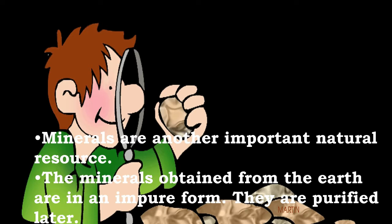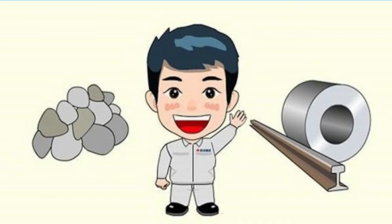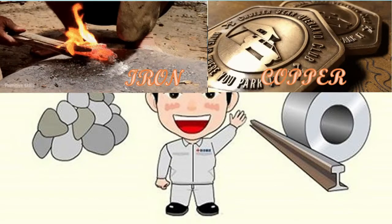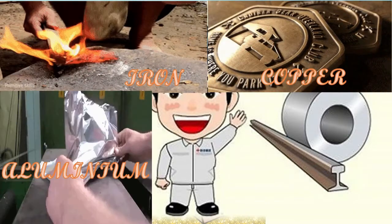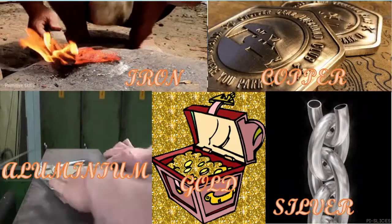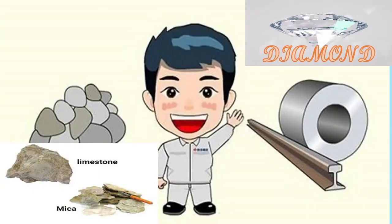Since minerals have impurities and are not in their pure form, they are purified later so that we can get the pure form. We get different metals from minerals such as iron, copper, aluminium, gold, and silver. Other than these metals, we also get diamonds, mica, and limestone from minerals.